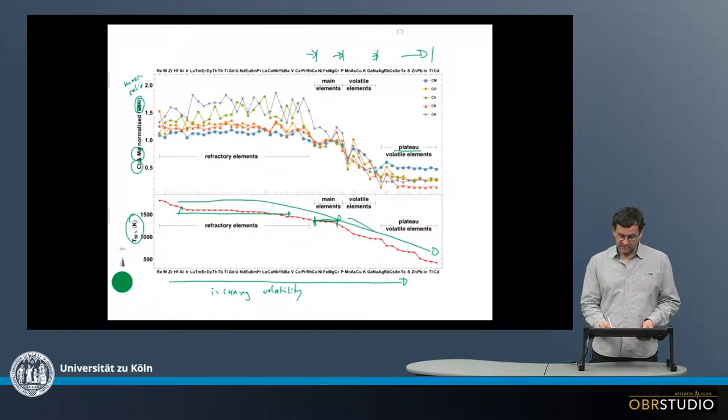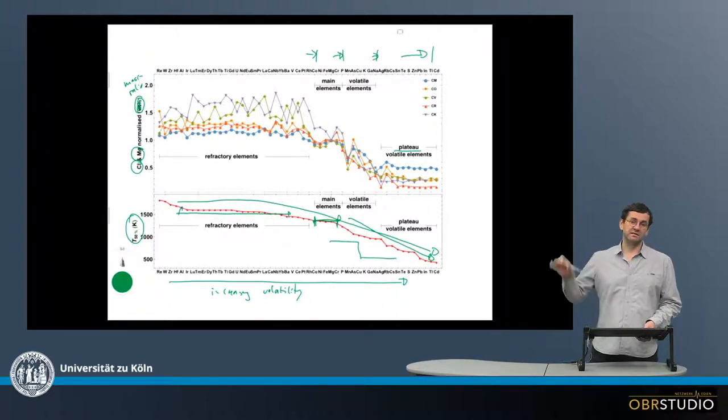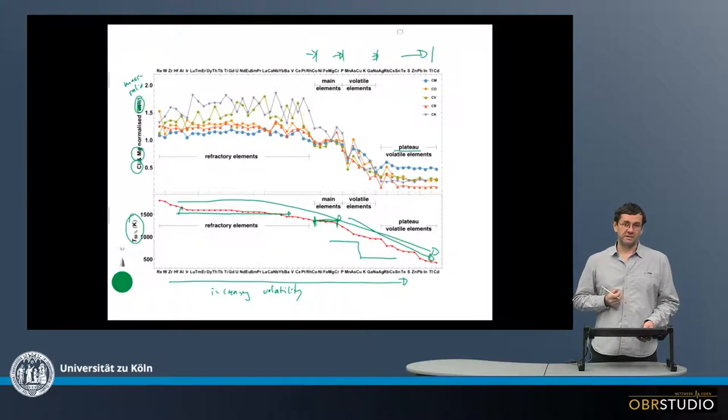Then for the volatile elements, there's a rather steep decrease in the 50% condensation temperatures. And importantly, this is a monotonic smooth decrease. So there's nothing like a step or something in between. Now let's go to the element concentrations, the normalized element concentrations in the various chondrites, which are the CM, CO, CV, CR, and CK chondrites.